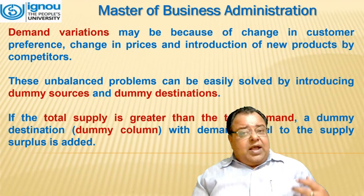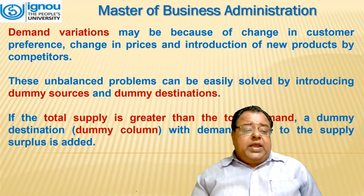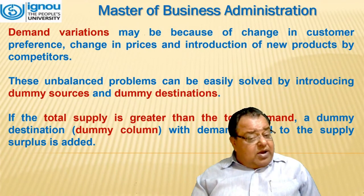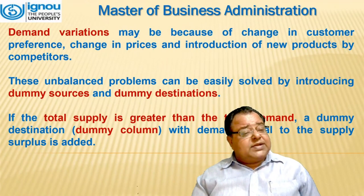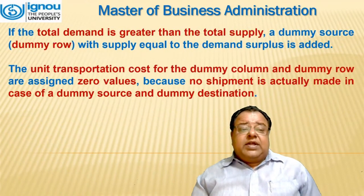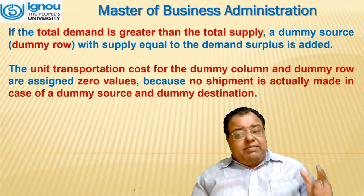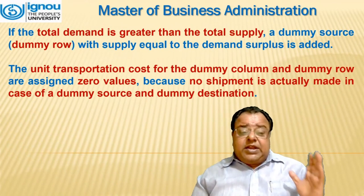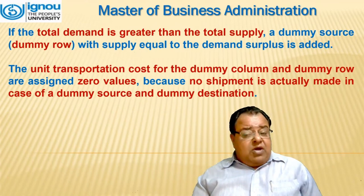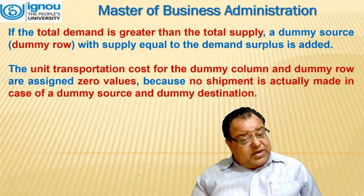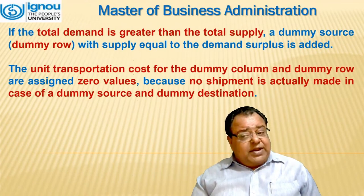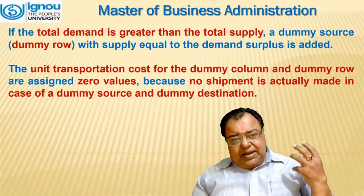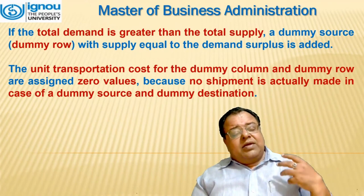If total supply is greater than total demand, a dummy destination column with demand equal to the supply surplus is added. If total demand is greater than total supply, a dummy source row with supply equal to the demand surplus is added. The unit transportation cost for dummy rows and columns is assigned zero values because no actual shipment is made for dummy sources or destinations.